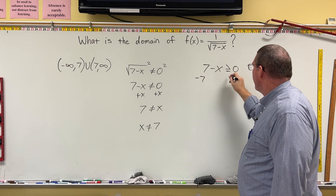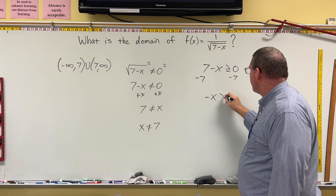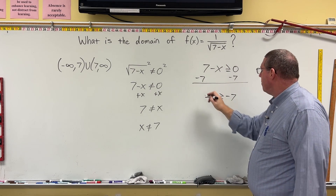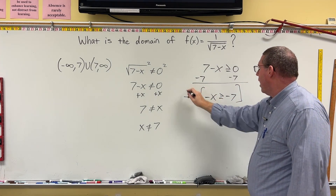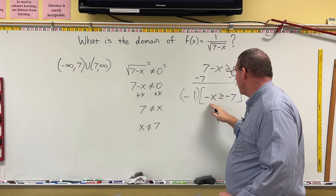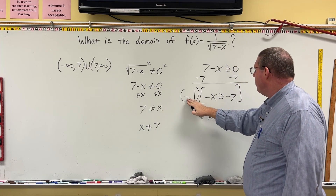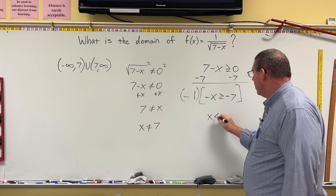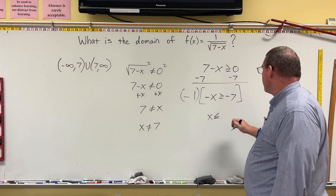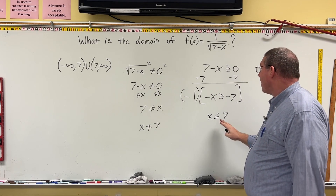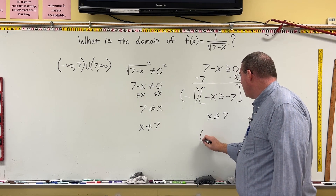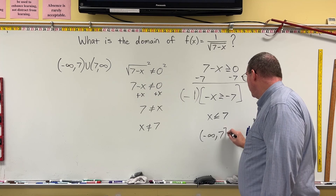So we take 7 minus x has to be greater than or equal to zero. Subtracting 7 from both sides gives negative x is greater than or equal to negative 7. We multiply by negative 1, making negative x become positive x, but we have to reverse the inequality symbol. So we get x is less than or equal to 7, which gives us negative infinity up to 7 inclusive.